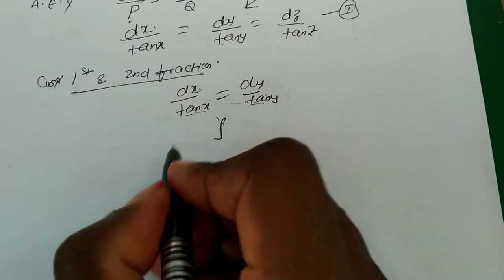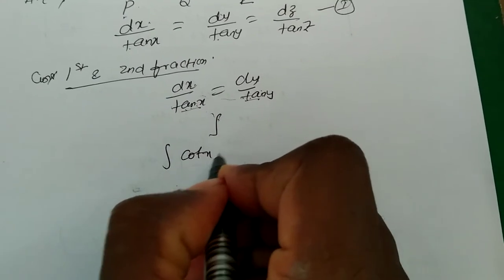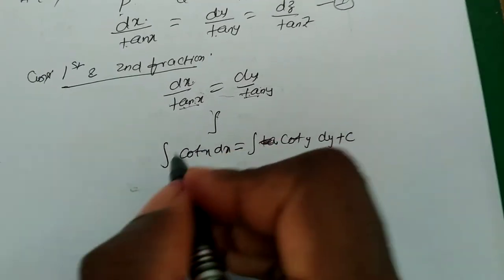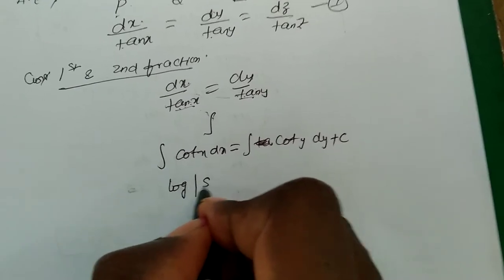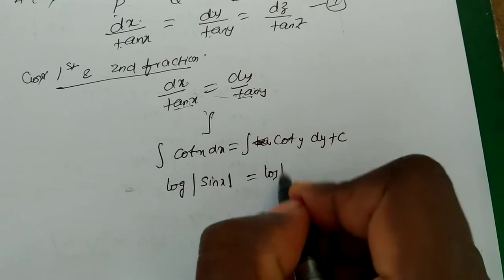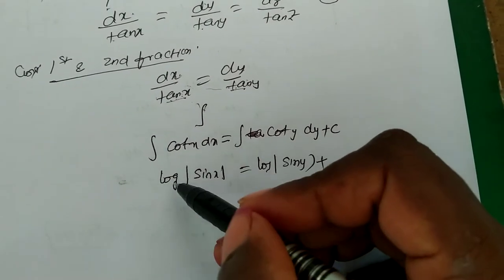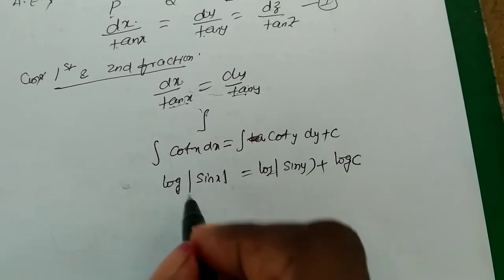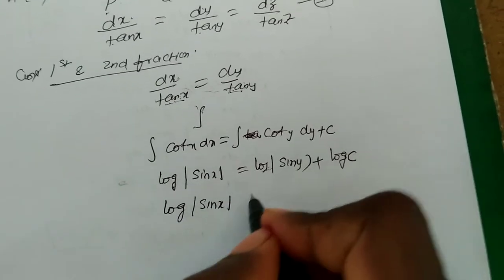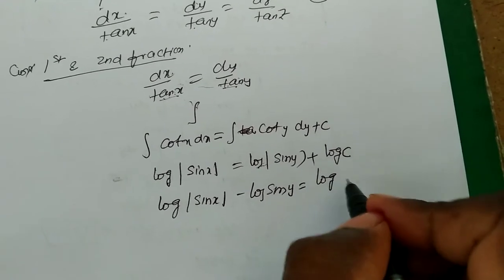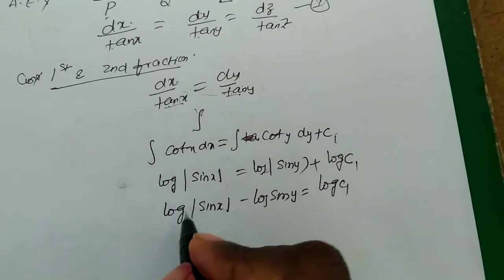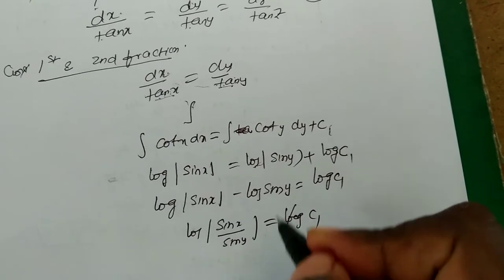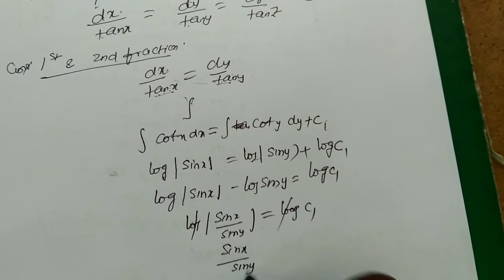Taking integrals on both sides: integral of 1 by tan x is cot x dx, and integral of 1 by tan y is cot y dy. Integral of cot x is log mod sin x, and integral of cot y is log mod sin y. Since both integrals give logarithmic functions, we write log sin x minus log sin y equal to log c1. Using log a minus log b equal to log a by b, we get log of sin x by sin y equal to log c1, so sin x by sin y equal to c1.